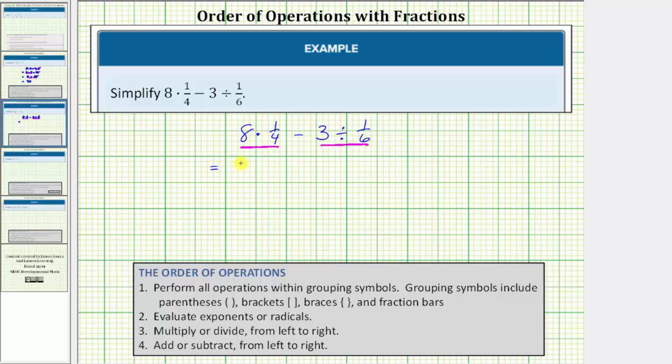Let's write eight as eight over one times one-fourth. Before multiplying notice how we can simplify. Eight and four share a common factor of four. There's one four in four and two fours in eight. Multiplying we have two times one which is two all over one which simplifies to two.